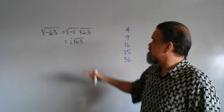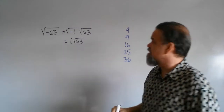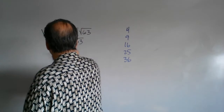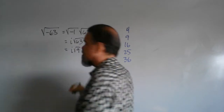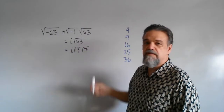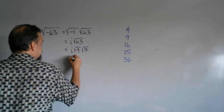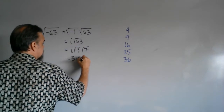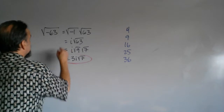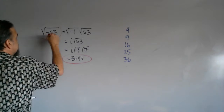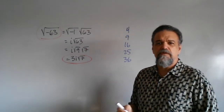As I look at that 63, I think I know a perfect square that goes into that — 9 again. So this is going to be i times the square root of 9 times the square root of 7, because 9 times 7 is 63. The square root of 9 is 3. So this will be 3i times the square root of 7. And we are done — the square root of negative 63 equals 3i times the square root of 7.